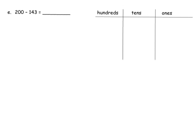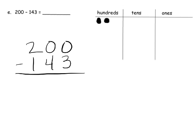One more practice to make sure we're up on this. We're going to model 200 on the place value chart — that's an easy one to model, it's just 200. And let's get 200 minus 143 written down vertically. It says we need to take away 3 ones. Well, we don't have any ones, so we're going to have to do some unbundling — in fact, we're going to have to unbundle twice.